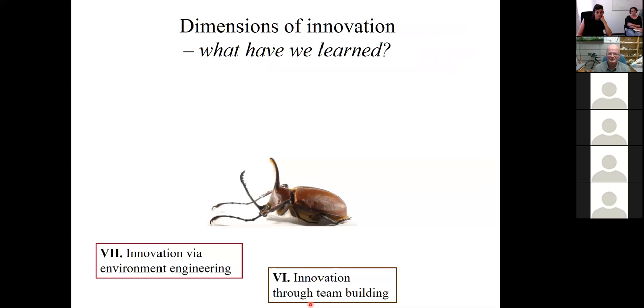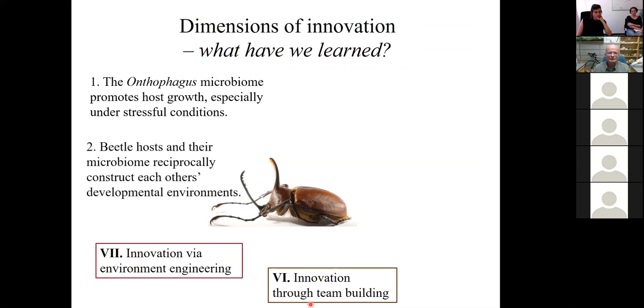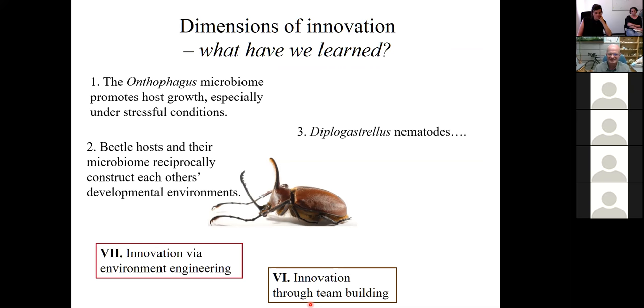So what have we learned? We have learned that the Onthophagus microbiome promotes host growth, especially under stressful conditions. Beetle hosts and their microbiome reciprocally construct each other's developmental environments. And with respect to the nematodes, I did have a nice summary. But then Ed Young, who wrote, I don't know if he's known in Germany, but he's very well known here. And I highly recommend this book, I Contain Multitudes. It's a fantastic example of science journalism. When he learned about the study, he tweeted the following tweet: 'Dung beetles carry nematode worms in their junk. Those worms pass into the nurseries where the beetles' larvae grow and terraform the environment. The larvae grow faster as a result. It's the circle of life.' And, you know, can't beat that.